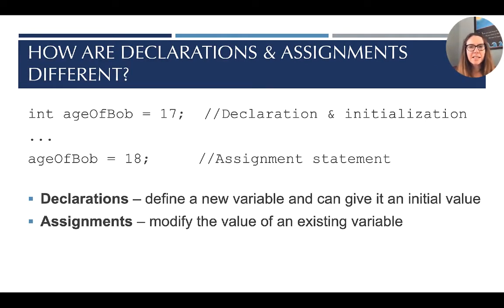How are declarations and assignments different? We see on the first line we have an integer variable declared and initialized, and on this last line we have an assignment statement where we set ageOfBob equal to 18. Declarations define the new variable and they can give it an initial value. Assignment statements modify something that already exists. So declaration happens when there is no variable in existence, and assignment takes place when modifying the value of an existing variable.